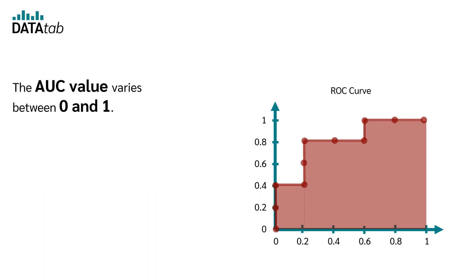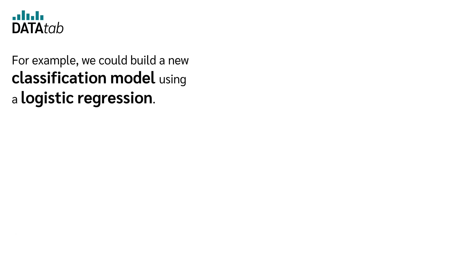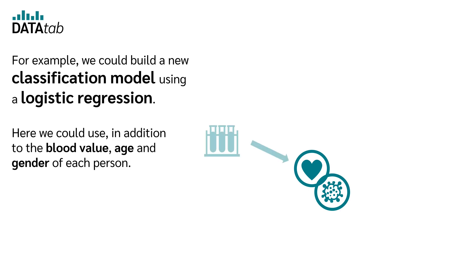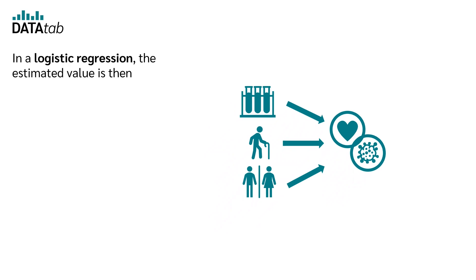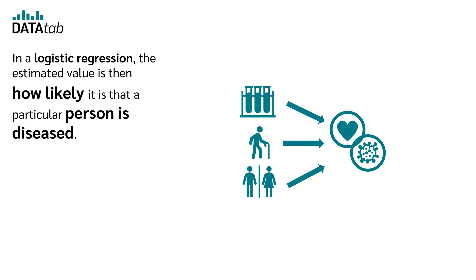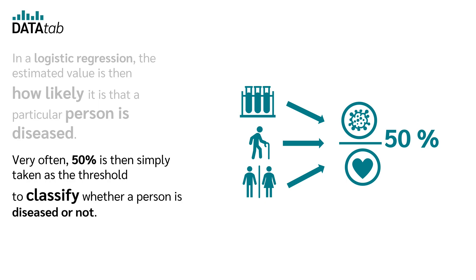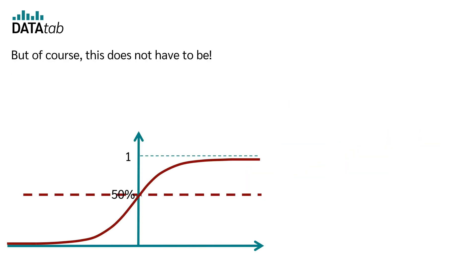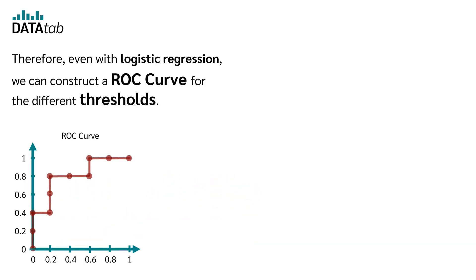The AUC value varies between 0 and 1. The larger the value, the better the classifier. But what about the ROC curve and logistic regression? For example, we could build a new classification model using a logistic regression, using in addition to the blood value the age and gender of a person. In a logistic regression, the estimated value is how likely it is that a particular person is diseased. Very often 50% is simply taken as the threshold, but of course any other threshold can also be used. Therefore, even with logistic regression, we can construct a ROC curve for the different thresholds.